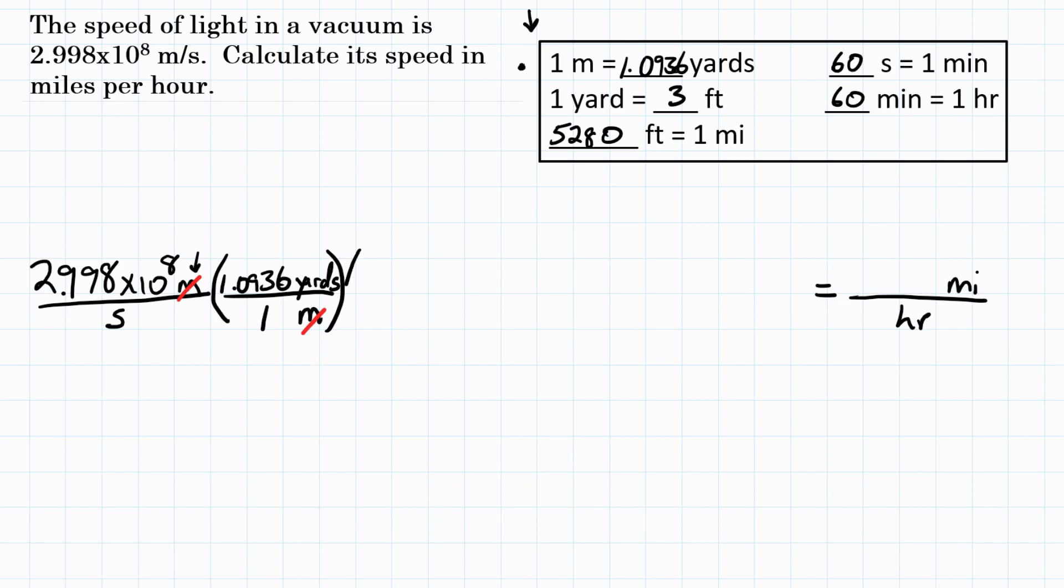So now I have yards per second. We got to turn yards into feet. So yards is on top, so I need that on bottom now. And I need what I can go to, which would be feet on top. One yard is exactly three feet. So at this point, yards would cancel out and I would have feet per second.